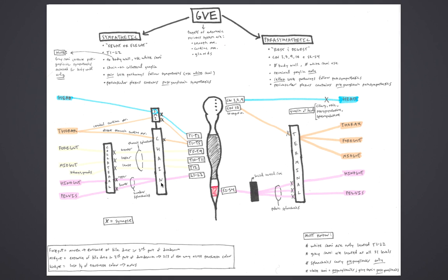Sympathetics to the thorax arise from segments T1 to T5. There are cardiac, pulmonary, and esophageal plexuses, but for the thorax in general, preganglionic fibers arise from T1 to T5, traverse white rami to enter the chain where they synapse, and then postganglionics distribute to their targets via direct nerves. For example, postganglionics to the heart utilize the cervical cardiac nerves and the direct thoracic cardiac nerves. Cervical cardiac nerves come off the cervical chain ganglia from preganglionics that ascended the chain from T1 to T5, while thoracic cardiac nerves come off the T1 to T5 chain ganglia directly.